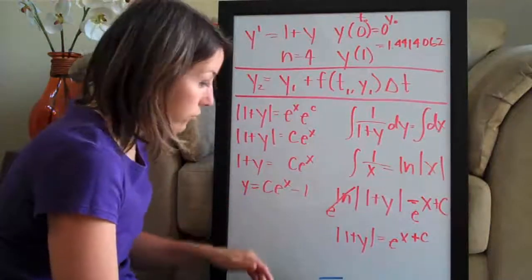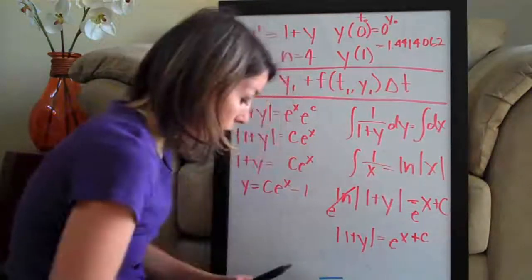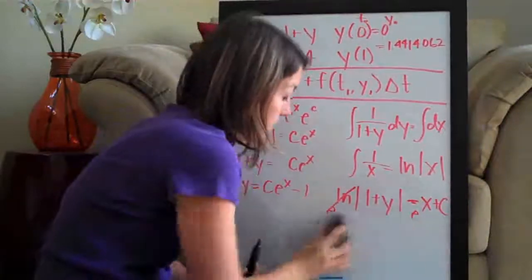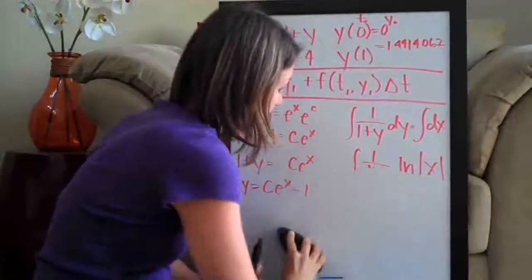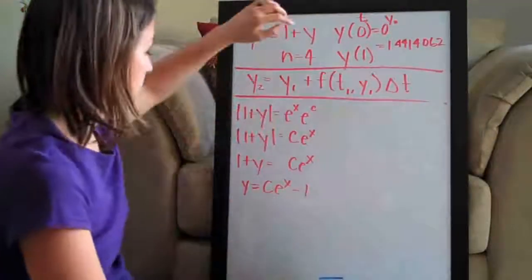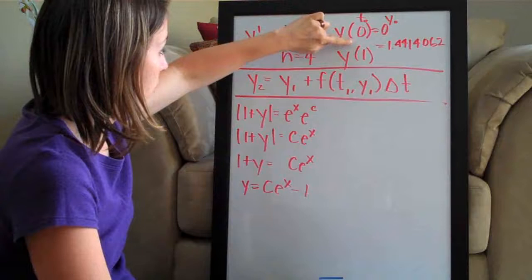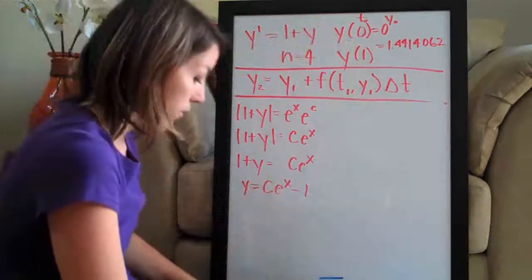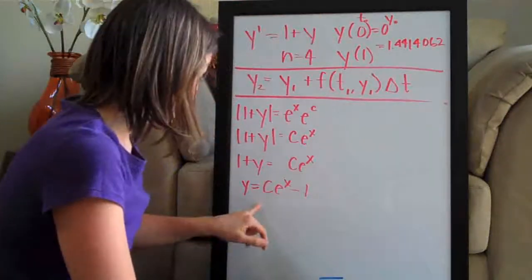Now that we've solved for y, we can plug in our initial condition which was y of 0 equals 0 and solve for c.